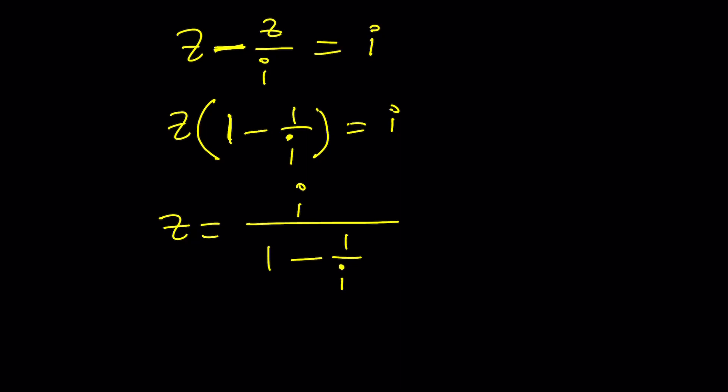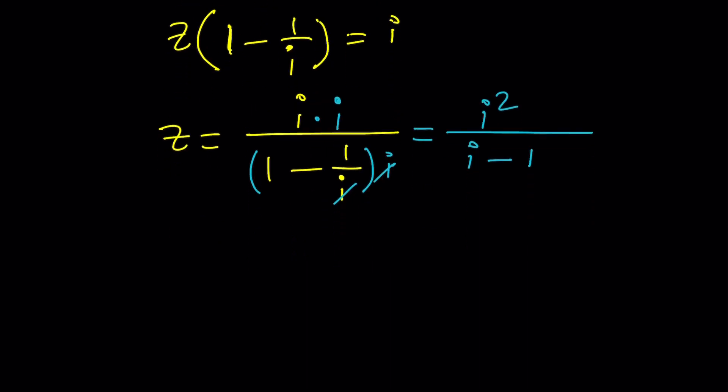So there's a couple different ways to proceed here. But I guess we could multiply the top and the bottom by I. So we can get I squared. And now the numerator is going to be I squared. And when you distribute the I, it's going to be I minus 1. I squared is negative 1. So Z is negative 1 over I minus 1. But I want to negate both the top and the bottom and write this as 1 over 1 minus I.